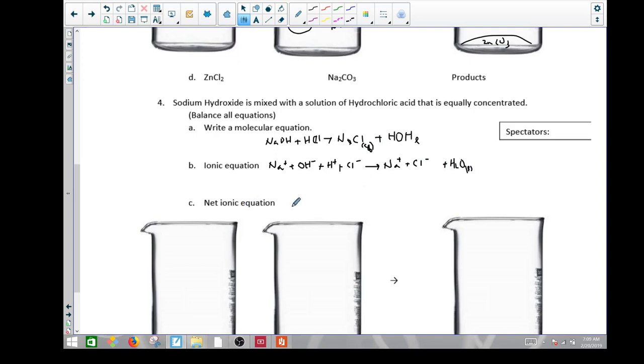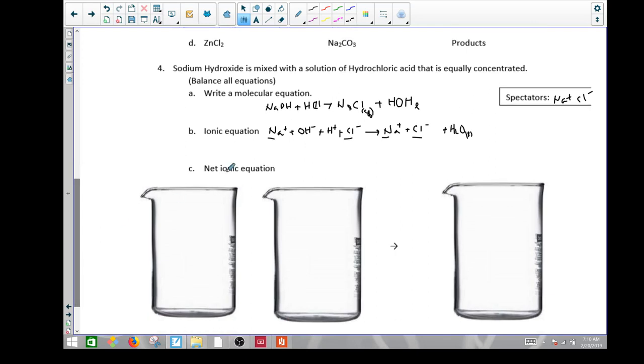So now removing spectators. What doesn't change here? The Na doesn't change. The chloride doesn't change. Just floating around before, floating around after. It says they're equally concentrated. So we'll just do this. OH negative plus H plus. All I'm doing is removing the spectators. H2O, and of course that's a liquid.